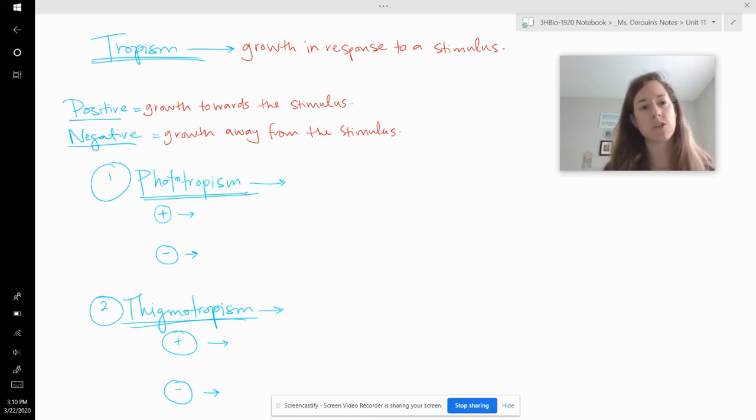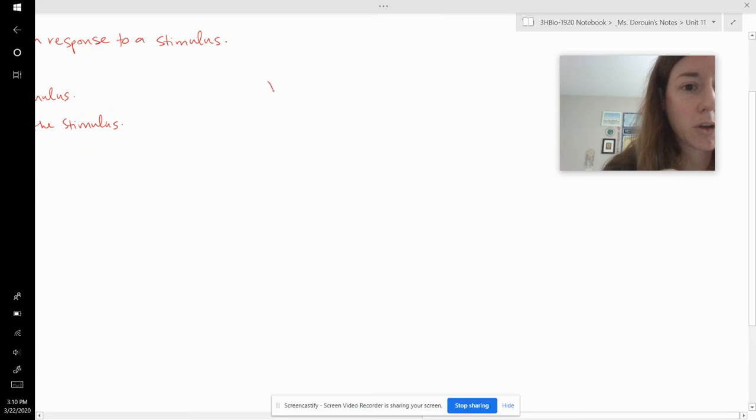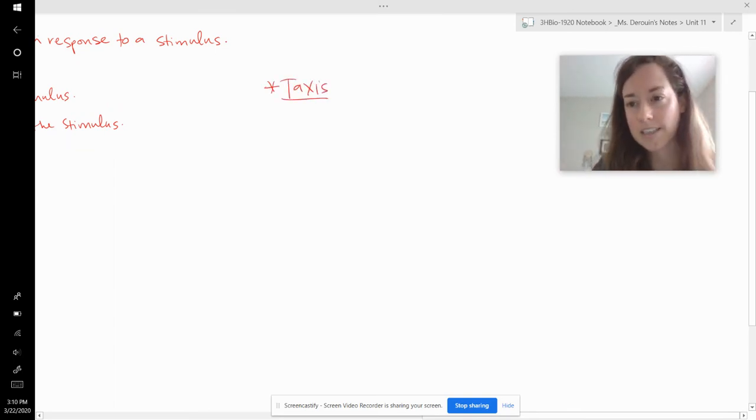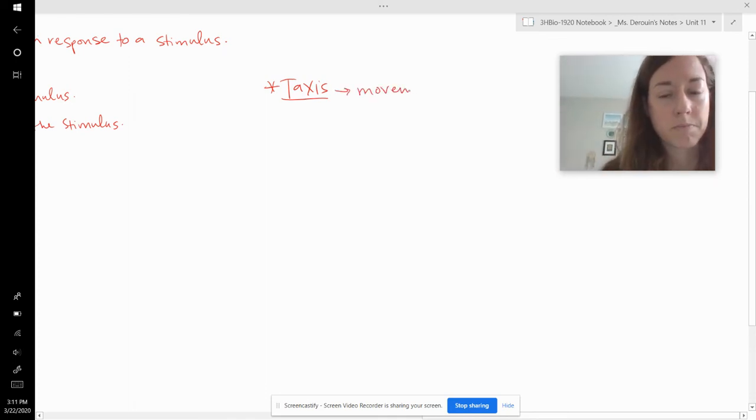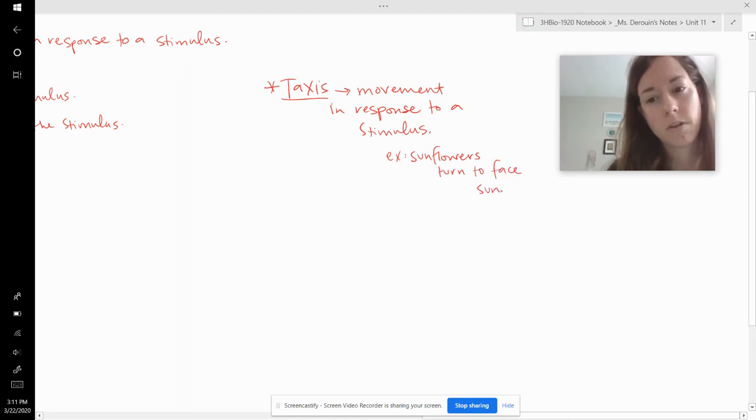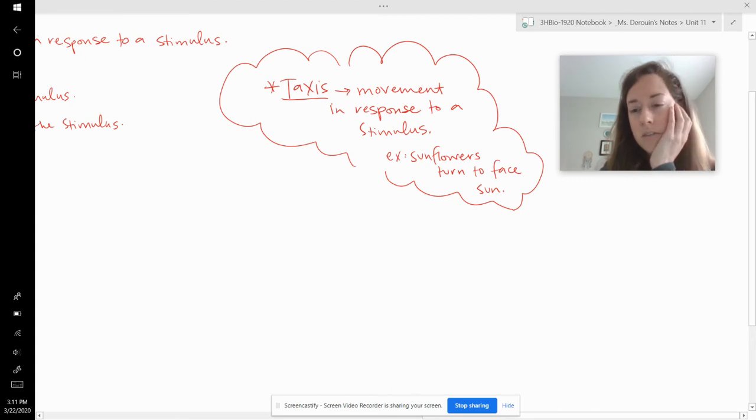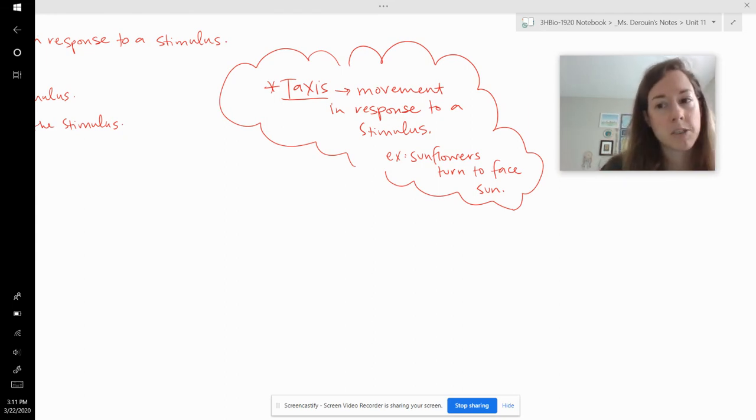Now, one thing that's important for me to mention here is that tropism is not the same as taxis. And taxis, those are taxis, which is spelled like taxis, but it's not taxis. It's taxis. This is just movement in response to a stimulus. But it's not growth. So an example of this is like sunflowers turn to face the sun. That would be photo taxis because it's in response to light. It's not phototropism because the sunflowers are not growing in that direction. They're just turning and then they'll turn right back when the sun moves again. So that's the difference between taxis and tropism.